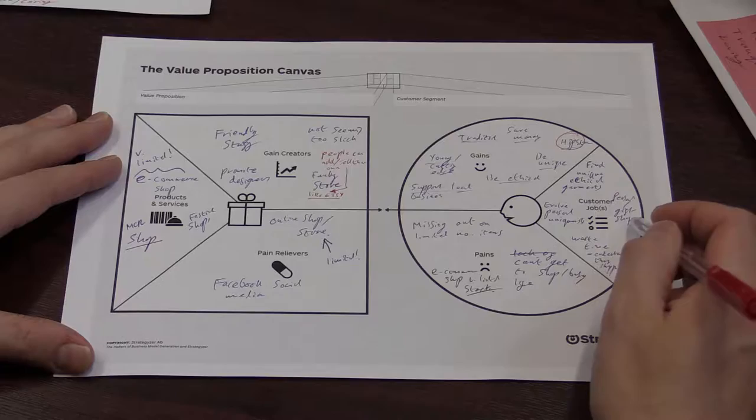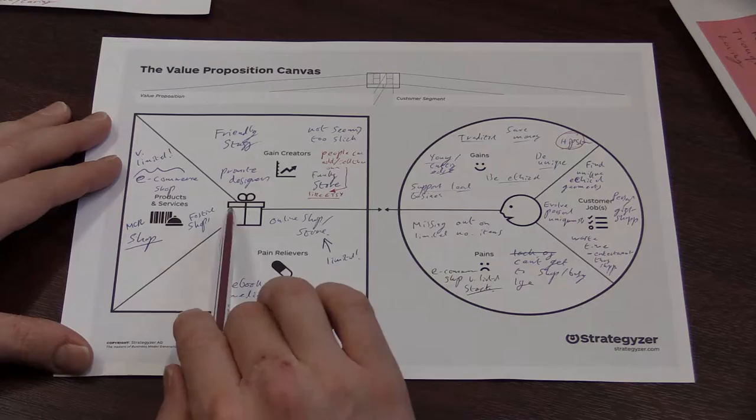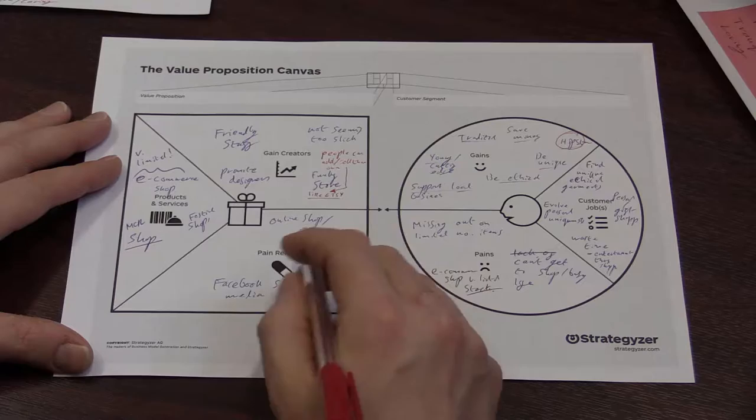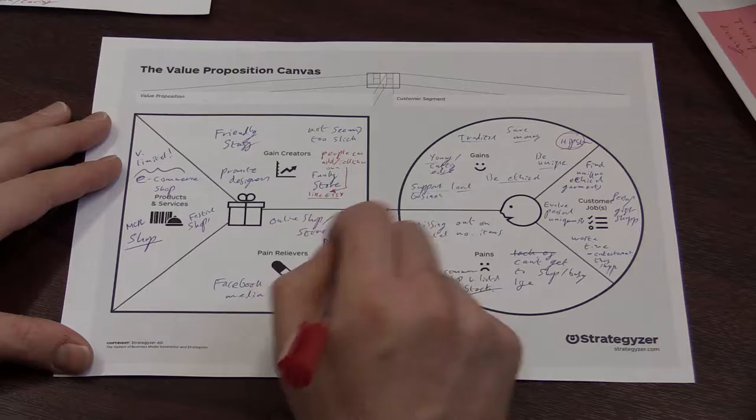And over here, we've got the propositions from the service point of view. Now, as we see here, there's much less done here than there is here because the actual website is pretty limited, actually. So the pain relievers, there's a Facebook, social media, so they can interact that way. There's an online store, but it's very, very limited. There's not much on there. And you can walk into the store, but right now, we're not really doing very much to relieve the pain. So there's lots of opportunities for growth there.